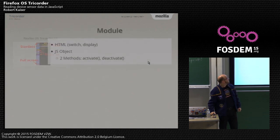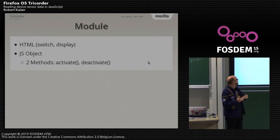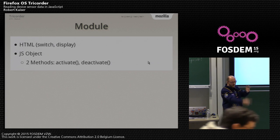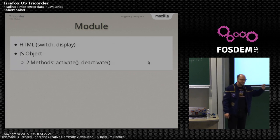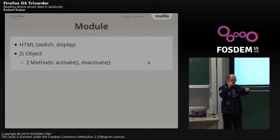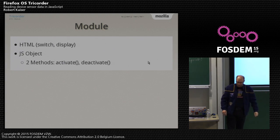I'll go through the interfaces module by module. What I'm calling a module here is some HTML that exposes the switch button and the actual UI, and a JavaScript object that has two methods: activate and deactivate. Those are automatically called by the functions when you switch between the modules — the active one is deactivated, the other one is activated — so we properly shut down everything that we had active from the last module.